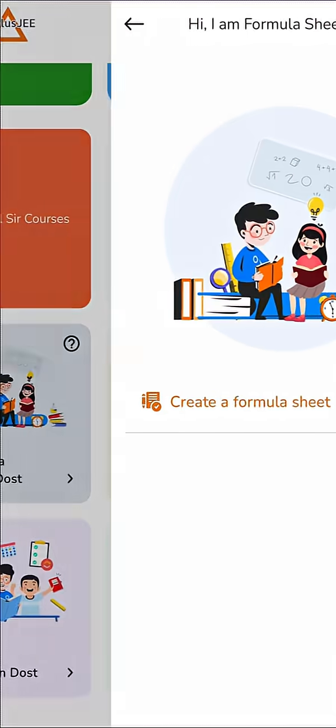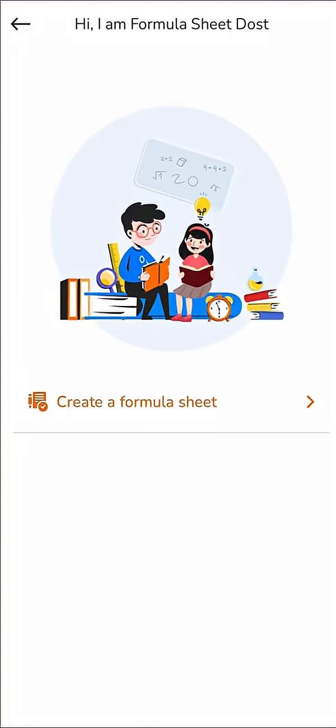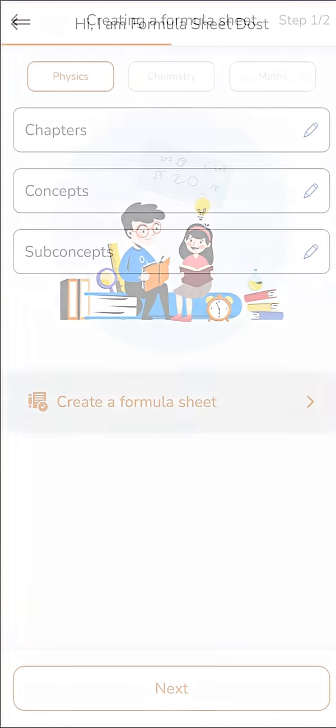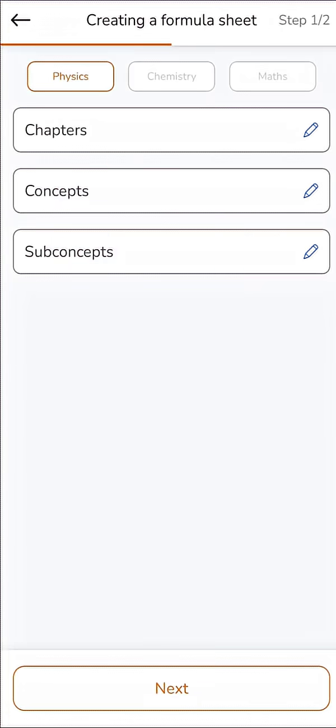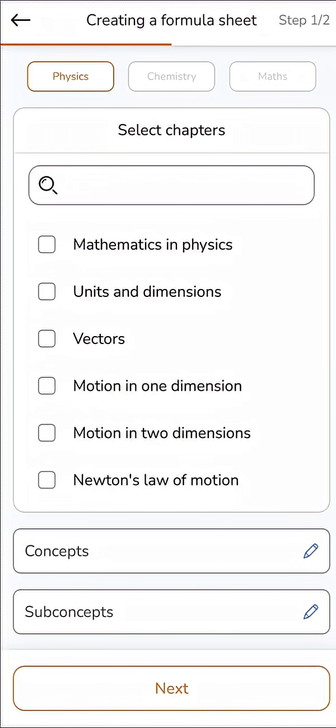When you open it, you'll see a screen that says, Hi, I'm a Formula Sheet Dost. And right below that there is an option saying Create Formula Sheet. Let's tap on that. Here, you can choose your subject, Physics, Chemistry, or Maths. For NEET aspirants, you'll get Biology instead of Maths.